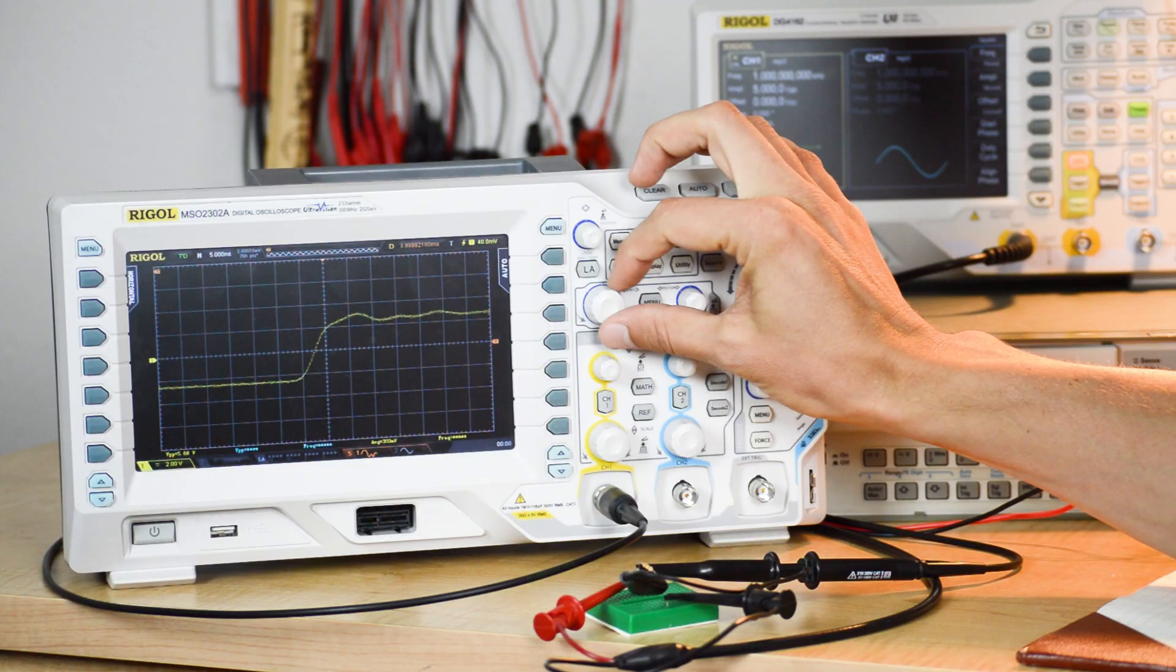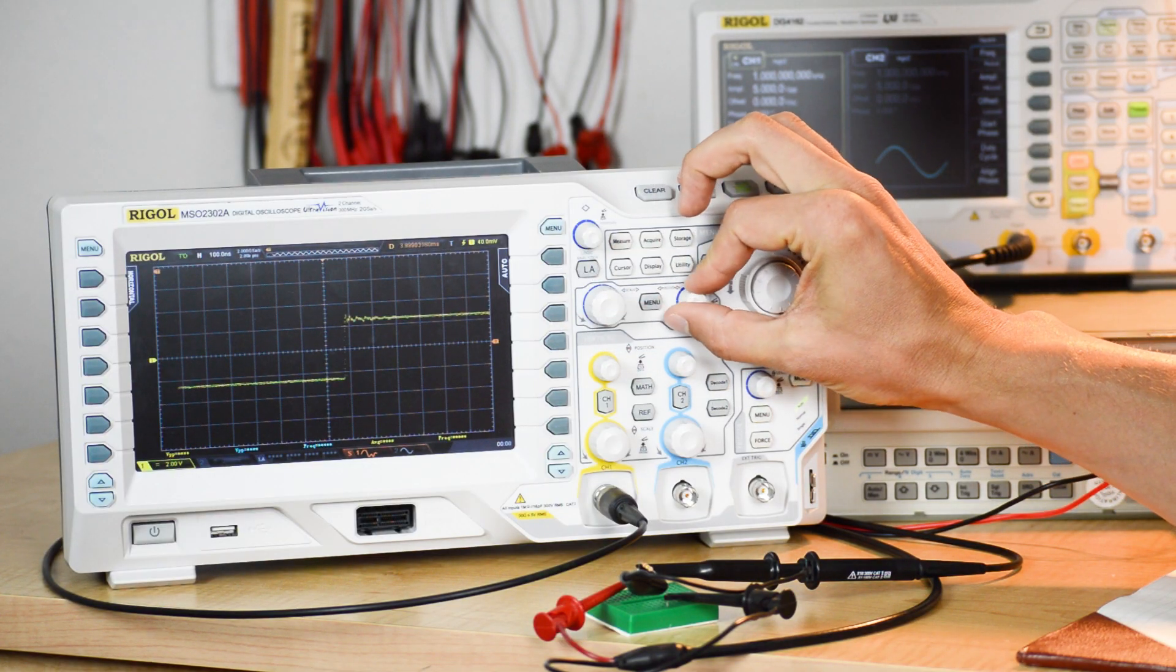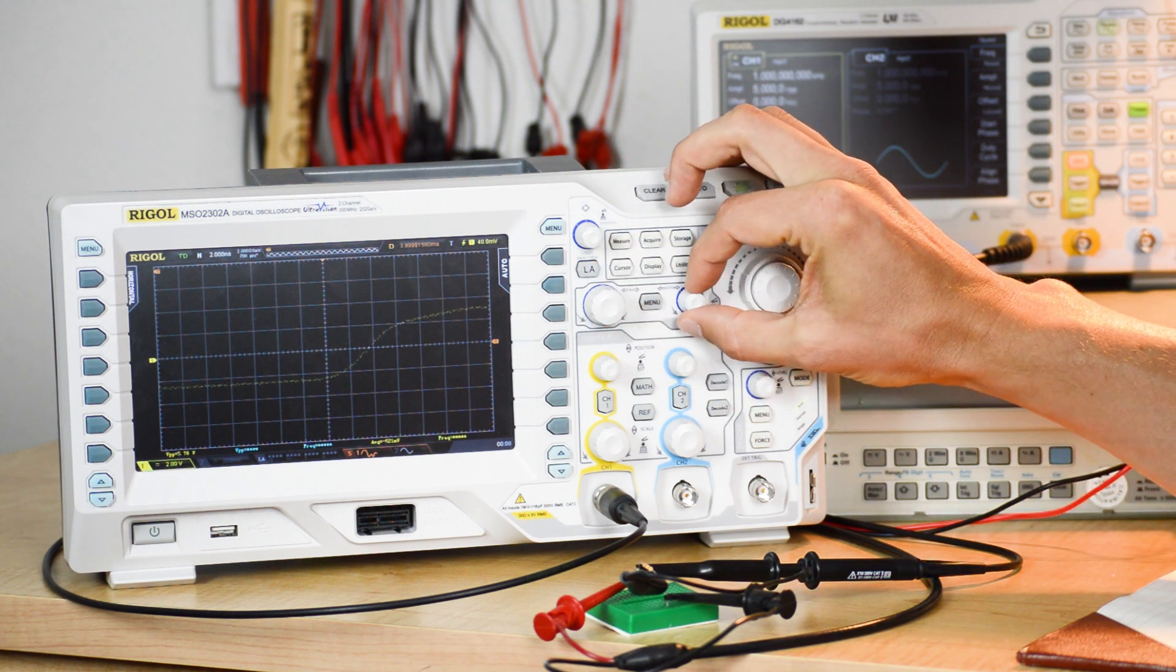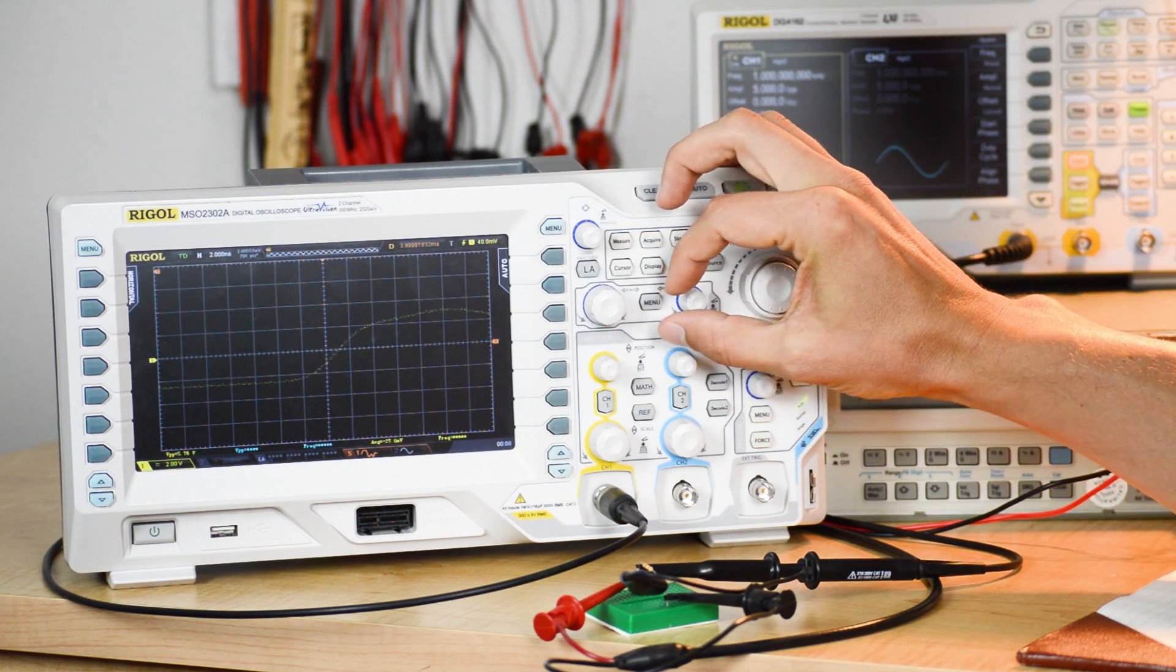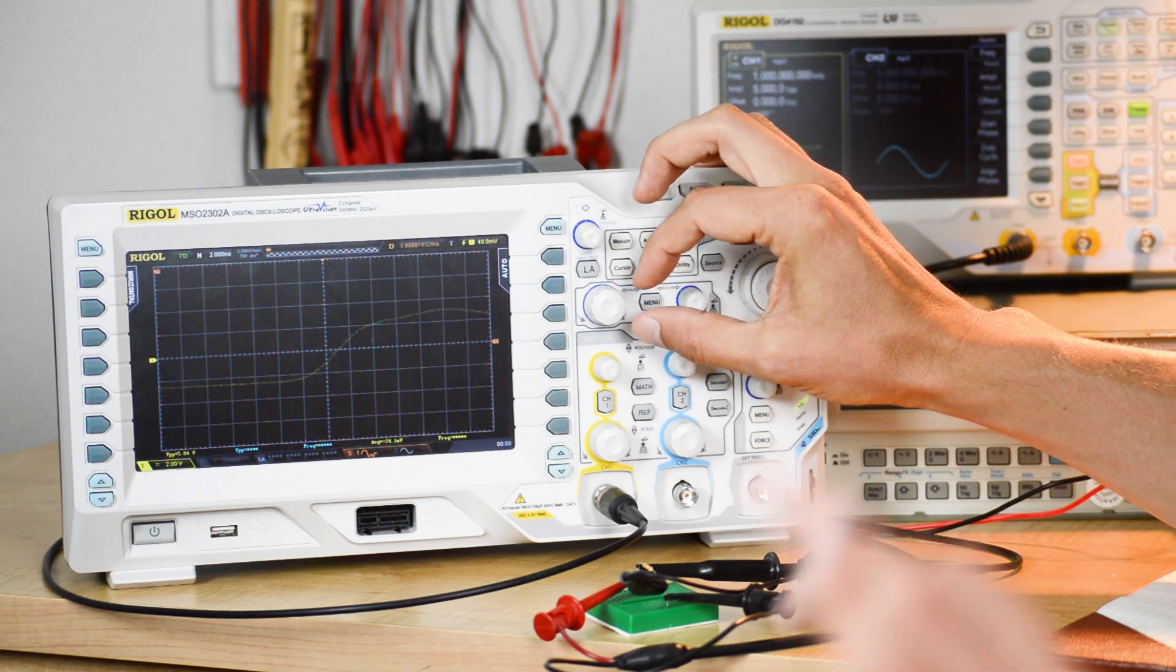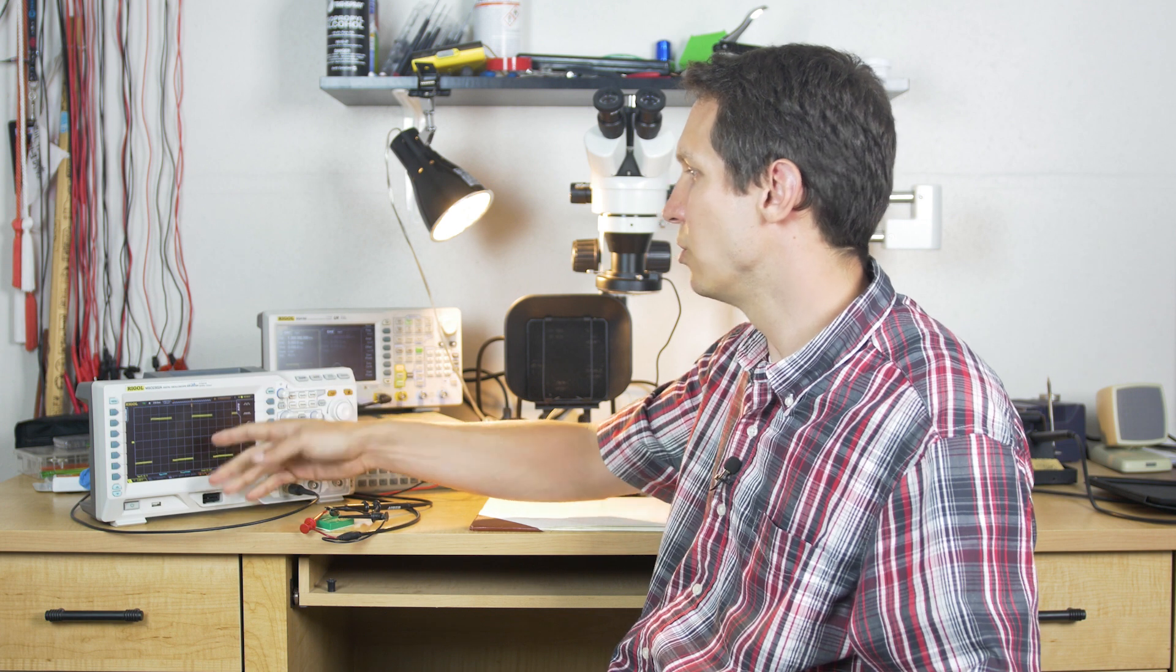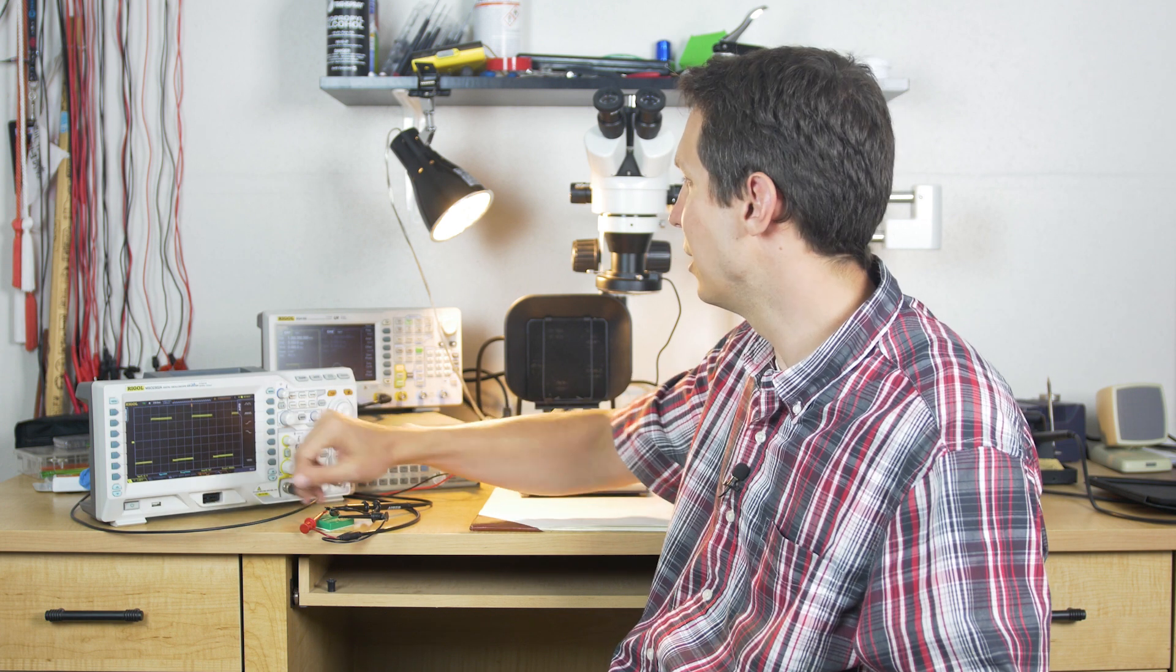Notice that I slid that over to get it in the center, then changed the width. Now it's two nanoseconds per division. That's how you find things. If you just use auto, you can't see those sorts of things. You can barely see the vertical lines at all.